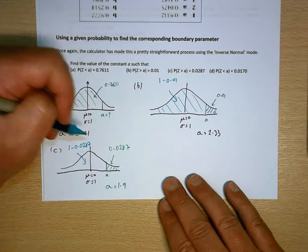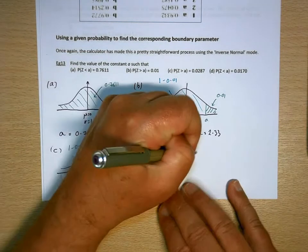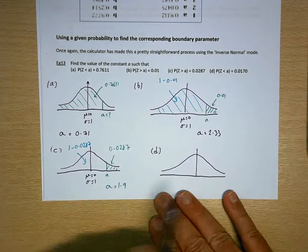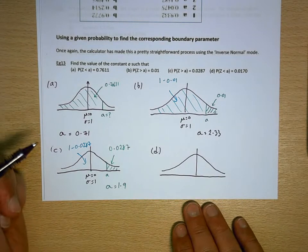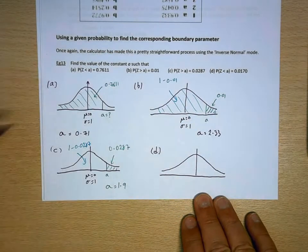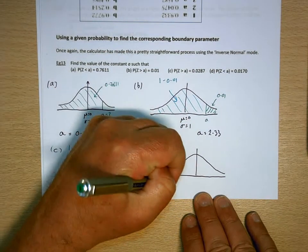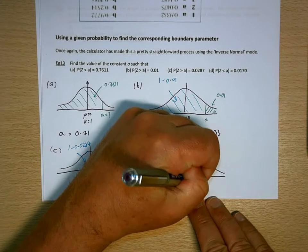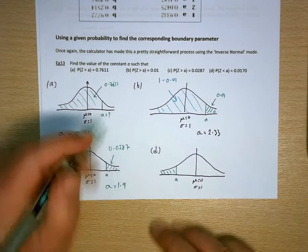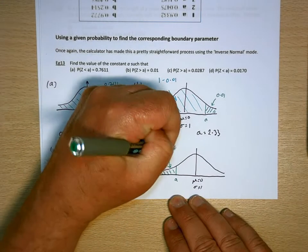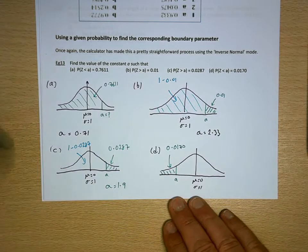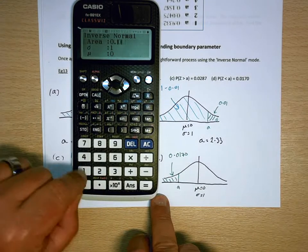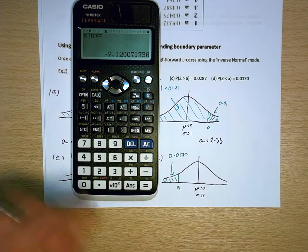And part D. So you may sort of worry a little bit that you don't seem to be showing any workings out, but your workings out is your diagram, so as long as it's clear what you're doing. So for this one we're back to less than, and it's a small value so it's going to be this side of the mean. And I'm interested in that area being 0.0170. So that's going to be minus 2.12.